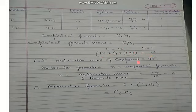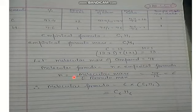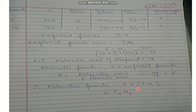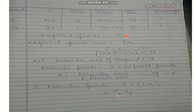Let the molecular mass of the compound (which contains 92.4% carbon and 7.6% hydrogen) be 78. To find the molecular formula: N = molecular mass / empirical formula mass = 78 / 13 = 6. So molecular formula = 6 × CH = C6H6. The actual number of carbon and hydrogen atoms is 6 each. The simple whole number ratio (1:1) is your empirical formula, while C6H6 is your molecular formula.